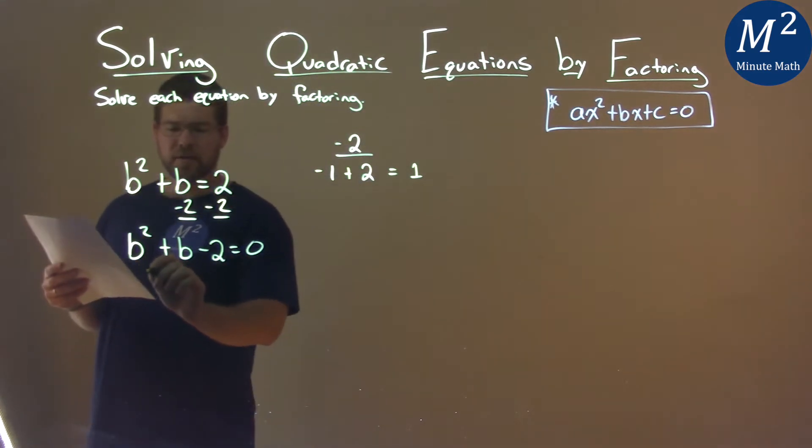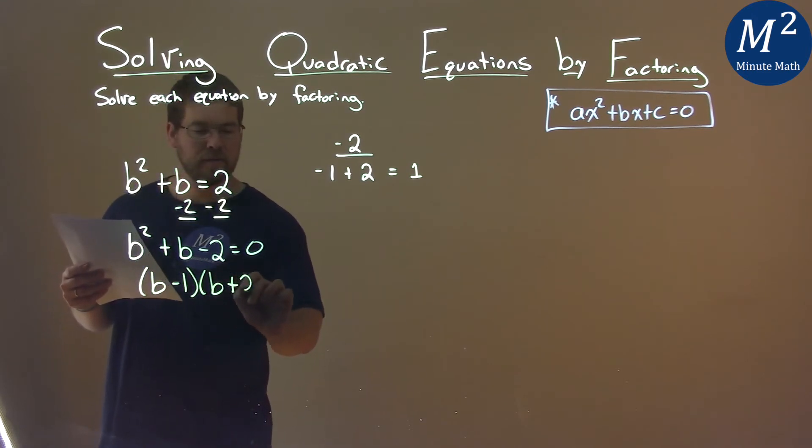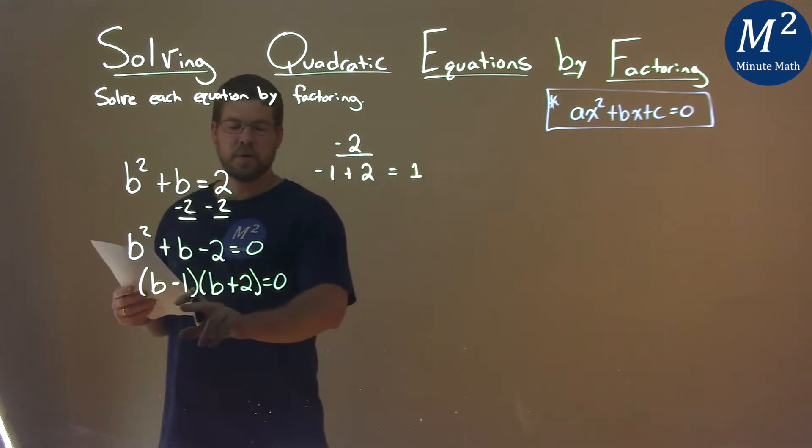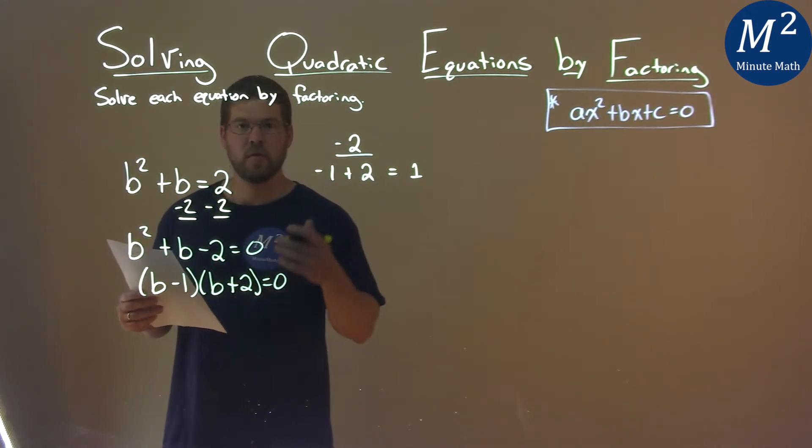So this factors to be b minus 1 and b plus 2, and that's equal to 0. Now I have to take each part individually and solve them.